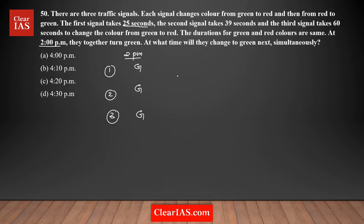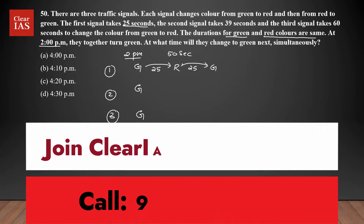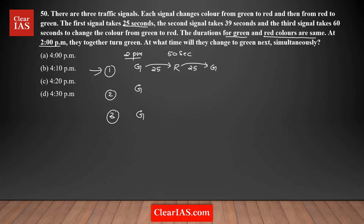The second signal takes 39 seconds and the third takes 60 seconds. The duration for green and red colors are the same. So for signal one: it takes 25 seconds to turn red, then another 25 seconds to change back to green — 50 seconds total. So every multiple of 50 seconds, signal one will be green: after 50 seconds, 100 seconds, and so on.